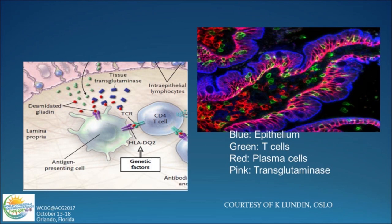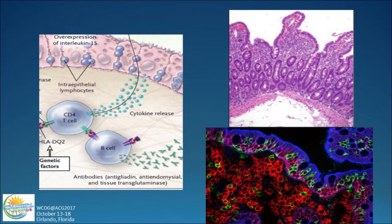These antigen-presenting cells present the deamidated gliadin molecule to CD4 T cells, which is then associated with the release of cytokines that cause tissue destruction, remodeling, and villus atrophy. Active celiac disease is associated with increasing intraepithelial lymphocytes and a marked increase in plasma cells. One byproduct is the development of antibodies that may or may not have a role in the pathogenesis.